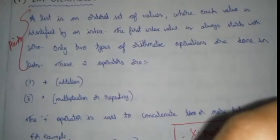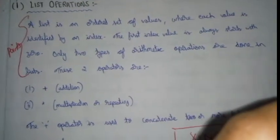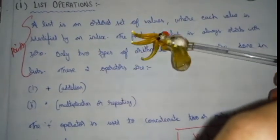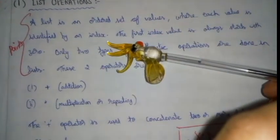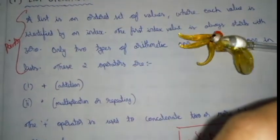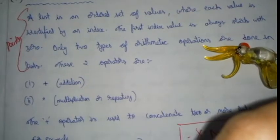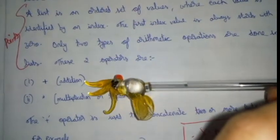First we want to see list operations. As you know, a list is an ordered set of values where each value is identified by its index. The first index value always starts with zero. There are two types of arithmetic operations that can be done in a list.